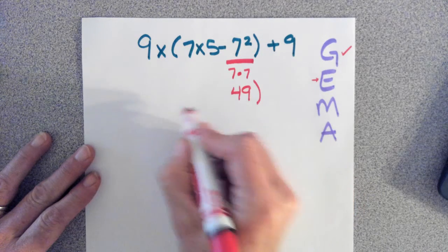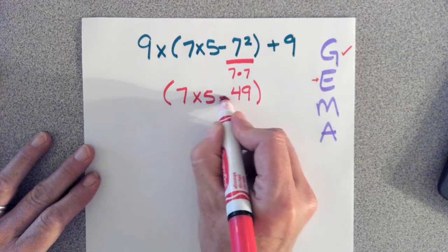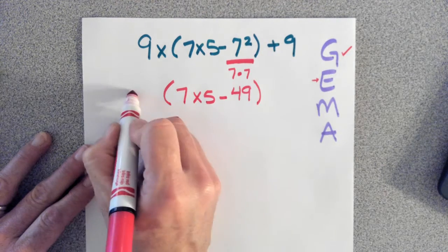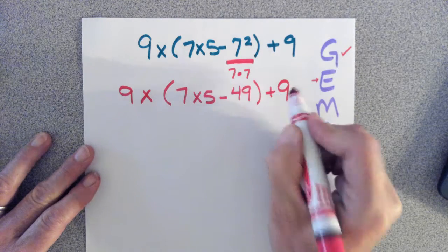So in the parentheses, we now have 7 times 5 minus 49. We also still have the 9 times in the front and the plus 9 in the back.